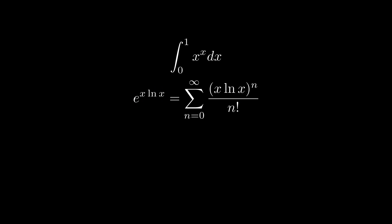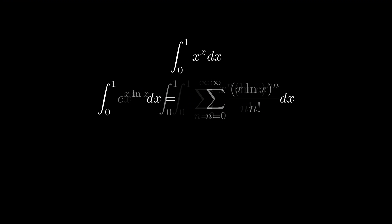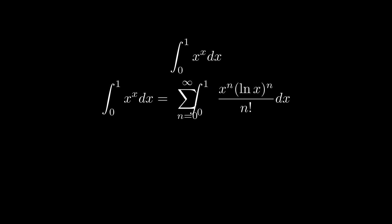Then we expand it to a series. If you forget the Taylor expansion of e^x, you can watch this video here. The original integral becomes the integral of infinite summation. We can switch the order of integral and summation because n factorial in the integrand guarantees that this series will converge absolutely.